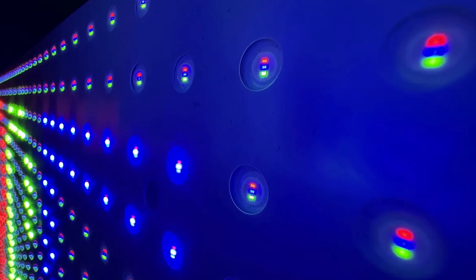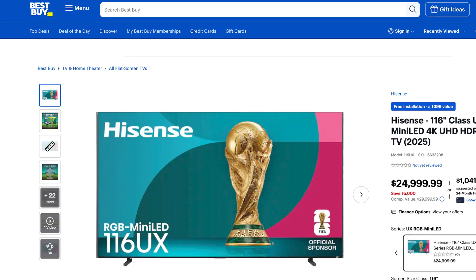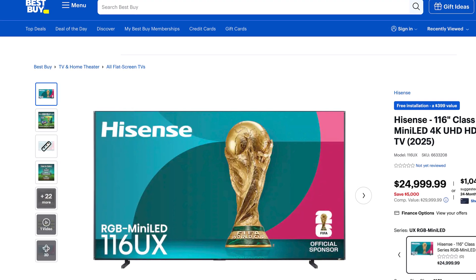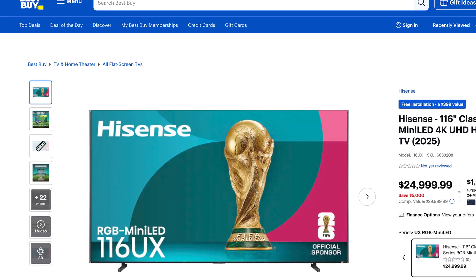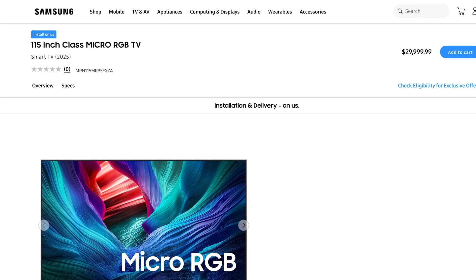RGB mini LED and micro RGB backlighting are just beginning to enter the market, with Hisense and Samsung leading the charge, while Sony is expected to launch models in 2026. The initial offerings are massive and expensive. Hisense's 116-inch model starts at $24,999 on Amazon, and Samsung's 115-inch model is priced at $29,999. Sony's pricing and sizes remain to be seen, but I think we can all predict that their prices will be subject to the Sony tax and end up being even more expensive than the prices I just mentioned.